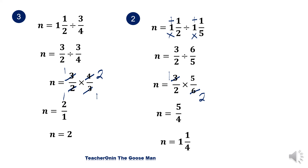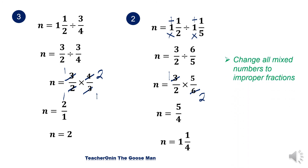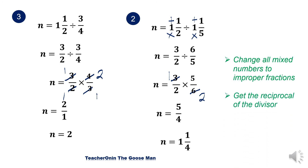To summarize our discussion on dividing fractions: first, change all mixed numbers to improper fractions; then get the reciprocal of the divisor; and finally, multiply as fractions and reduce if possible.